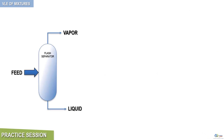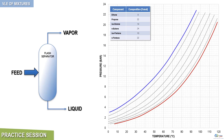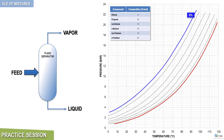The liquid mixture exits the flash separator at the bottom with the following molar composition. Shown now on screen is the vapor-liquid equilibrium diagram for this complex mixture. The blue curve represents the mixture bubble curve, where the percentage of vaporized mole is 0%. The red curve represents the mixture dew curve, where the percentage of vaporized mole is 100%. In between these two curves, you have five curves representing 10%, 30%, 50%, 70%, and 90% of vaporized mole.